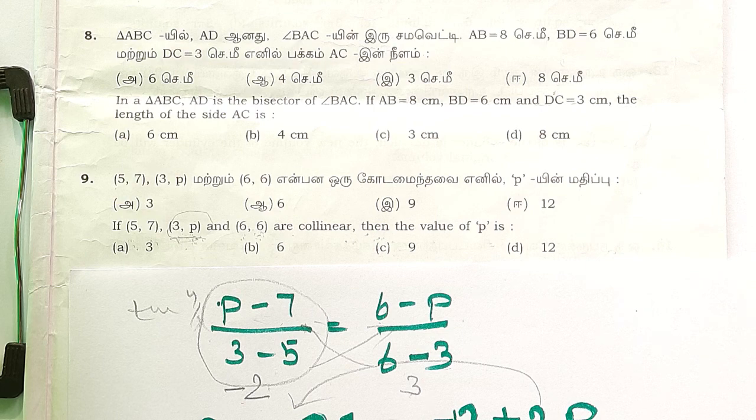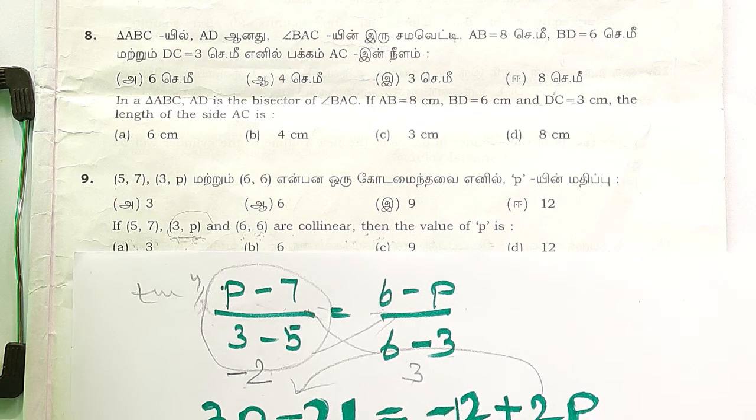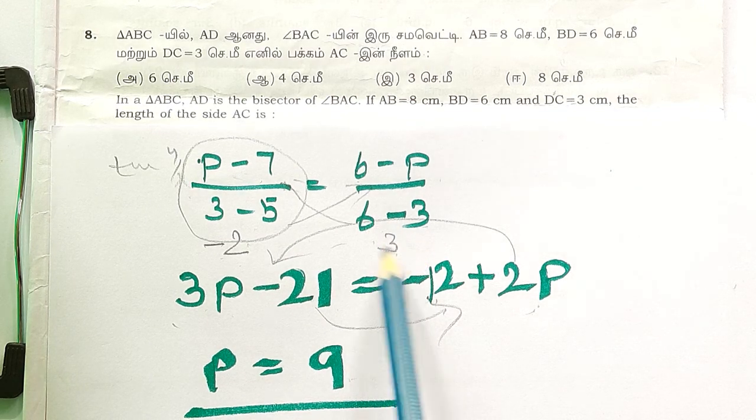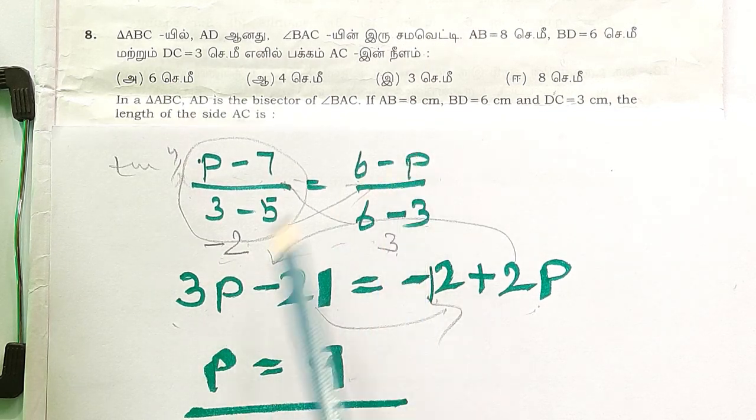to do it in 30 seconds. Then equalize them, cross multiply. What's the difference? Here 3, here minus 2, multiply them